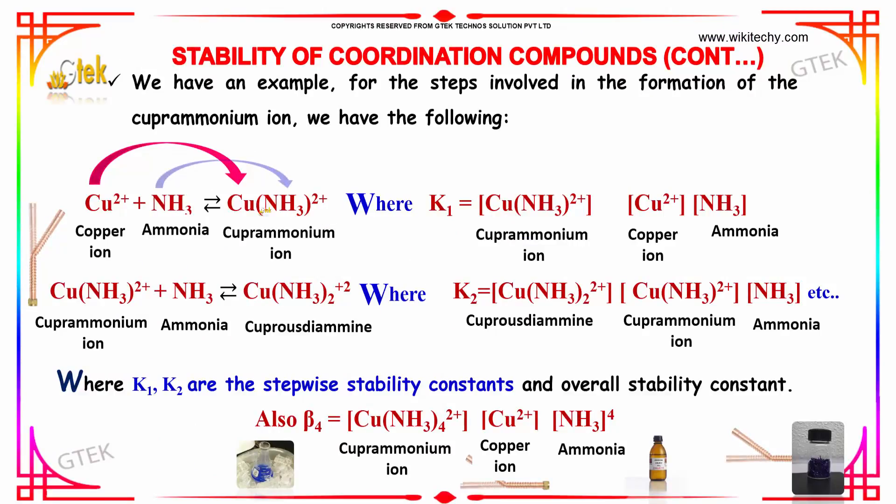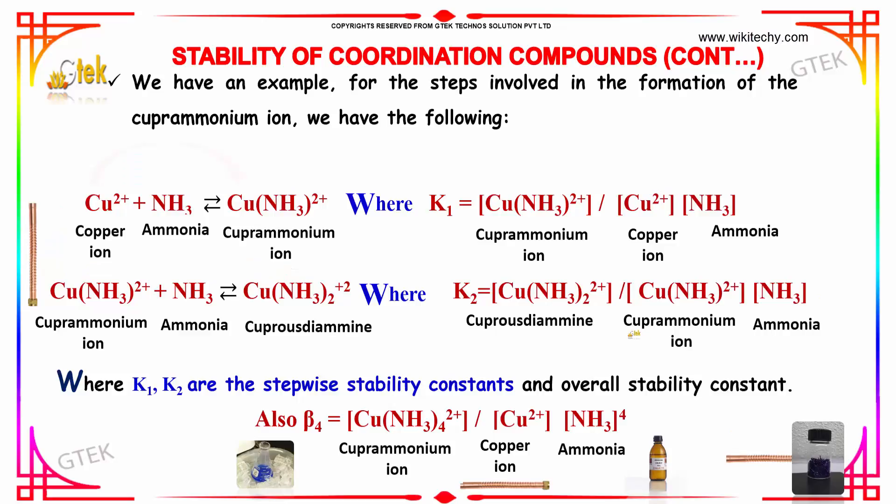Let's see a typical example of a copper ion mixed with ammonia will give cuprammonium ion. Here is an example for this step involved in the formation of a copper ammonium ion.